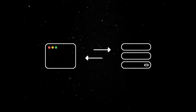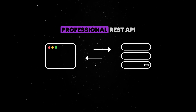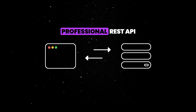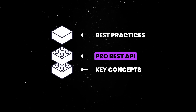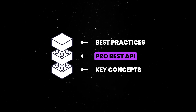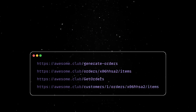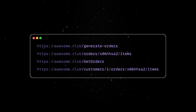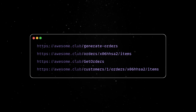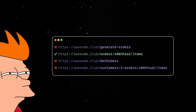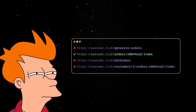What you might not realize is that building a professional REST API is easier than you would think. All you need to do is learn a few key concepts and best practices. Let's start by quickly assessing an example — in system design, only one of these URLs is considered correct. Do you know which one, and more importantly, do you know why?